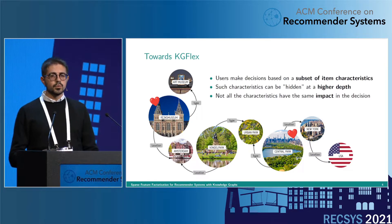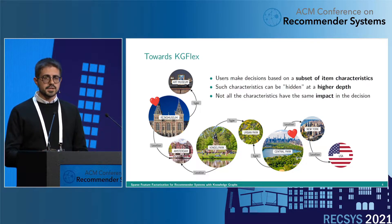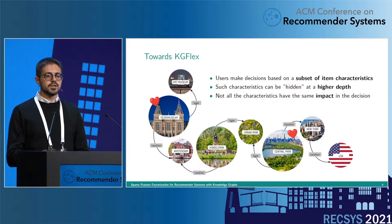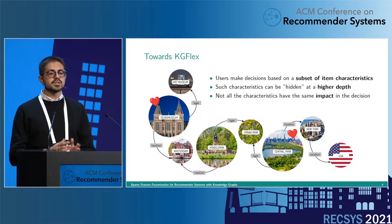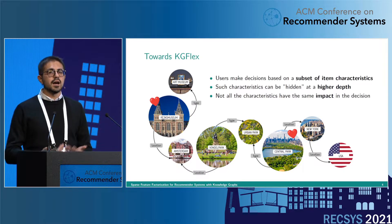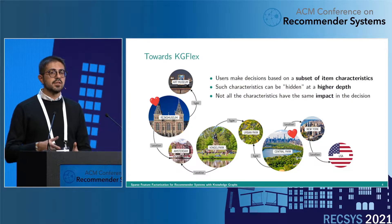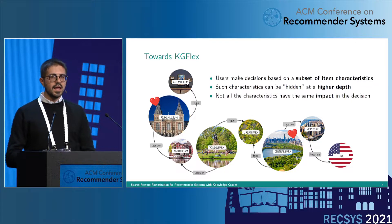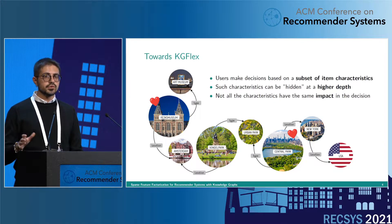For example, we can see some items — the large circles — connected to some other entities — the little circles — by means of some predicates. These are the three assumptions that guided the development of KG Flex. The first one is that users make decisions based on just a small subset of item characteristics, and such characteristics can be hidden at a higher depth — for example, a user may like Central Park because it's in the USA and not just because it's in New York. And finally, not all the characteristics have the same impact in the user decision process.